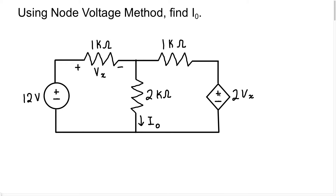The voltage it's going to be dependent on is Vx, which is going to be the voltage across this 1K resistor. So once we know the value of the voltage across this 1K resistor, we should know the value of this voltage source.